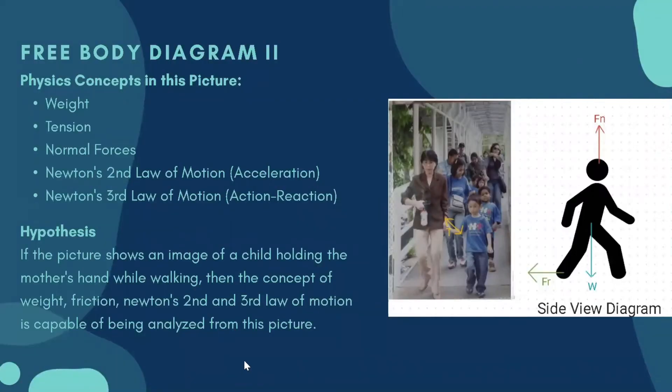Next, this is the second free body diagram. From this free body diagram, we are able to find the physics concepts of weight, tension, normal forces, Newton's second law of motion, and third law of motion. From this picture, there are two diagrams in total: the first is the front view, and the second is the side view.